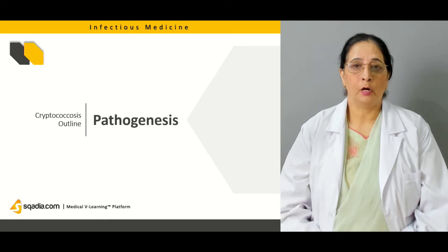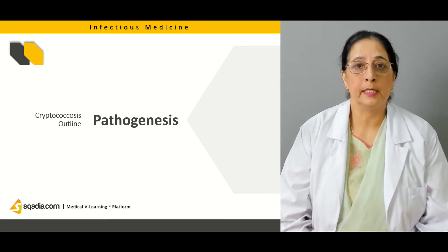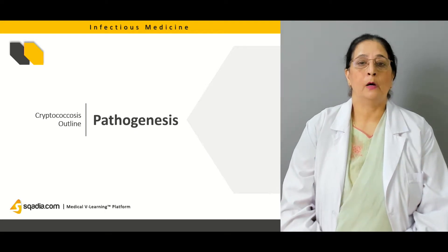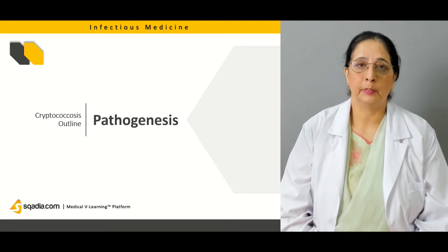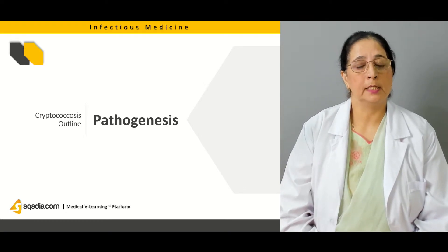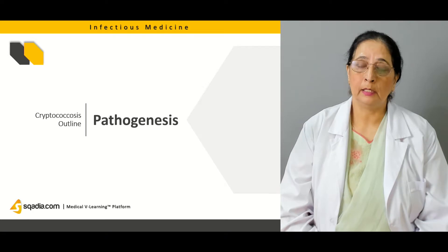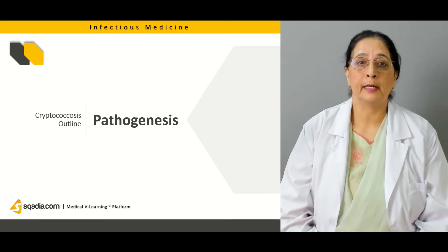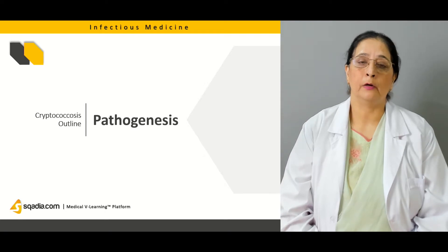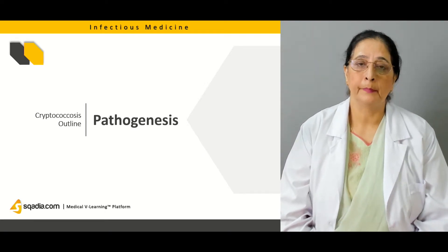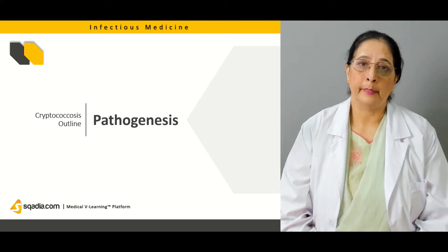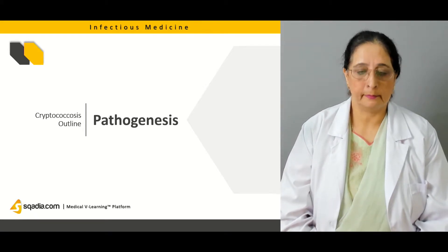Then we will talk about the pathogenesis of cryptococcus — how the infection spreads at the molecular level, how the virulence factors are released, and then how the spread of the microorganism occurs to the brain and can cause meningeal cryptococcal infection.